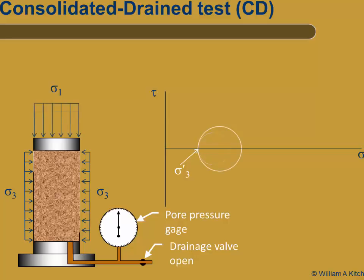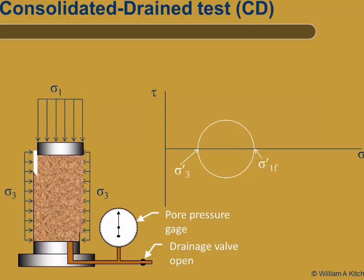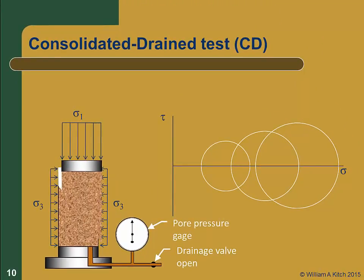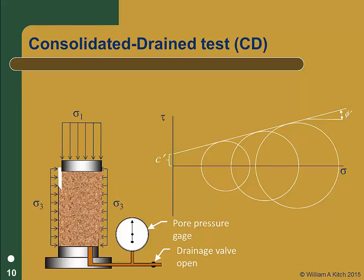Sigma1 is then increased until the soil fails, and since shearing is done so slowly that no pore pressures are generated, the major principal stress at failure is also an effective stress. If we test a second specimen but consolidate it to a higher confining stress, the soil will gain strength and have a larger Mohr circle at failure. Likewise, a third test at yet higher confining stress will produce an even larger Mohr circle at failure. Using the three failure circles, we can plot the failure envelope as the line tangent to the circles and compute the friction angle phi prime and cohesion c prime — an effective stress failure envelope, as noted by the prime symbol.